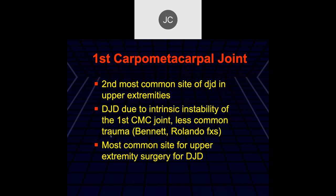Let's move on and talk about the first carpal metacarpal joint, which is one of the most commonly degenerated joints in the body due to a lot of use of the thumb and a lot of force going through the radial aspect of the wrist and hand. It's the most common site for upper extremity surgery for DJD, and a common place for instability from degenerative disease — with chronic tearing of the capsular structures.